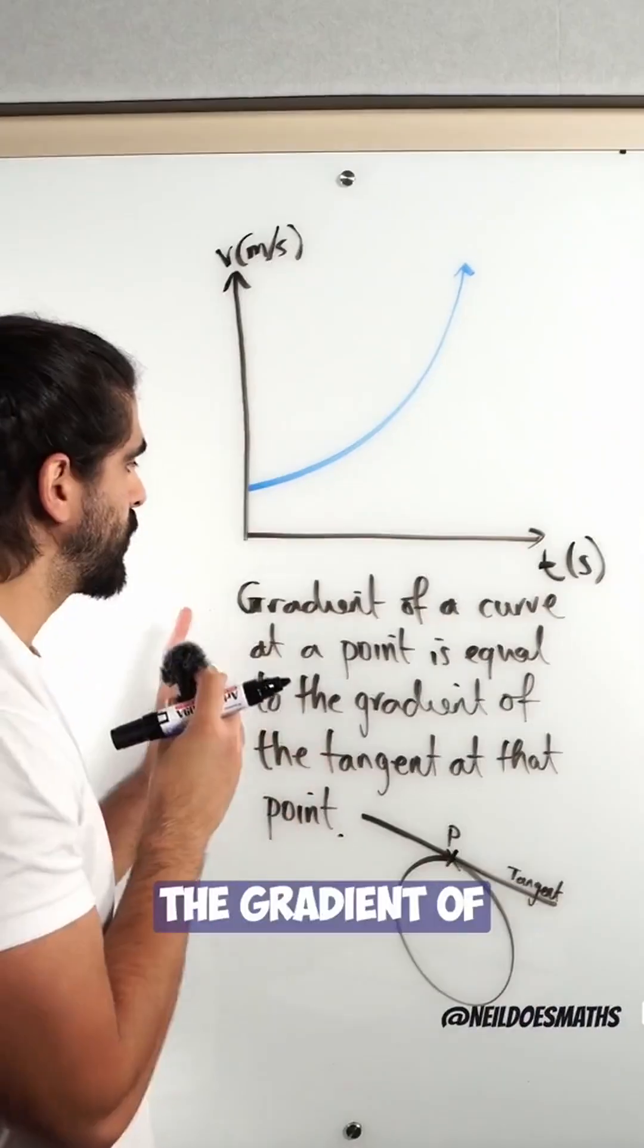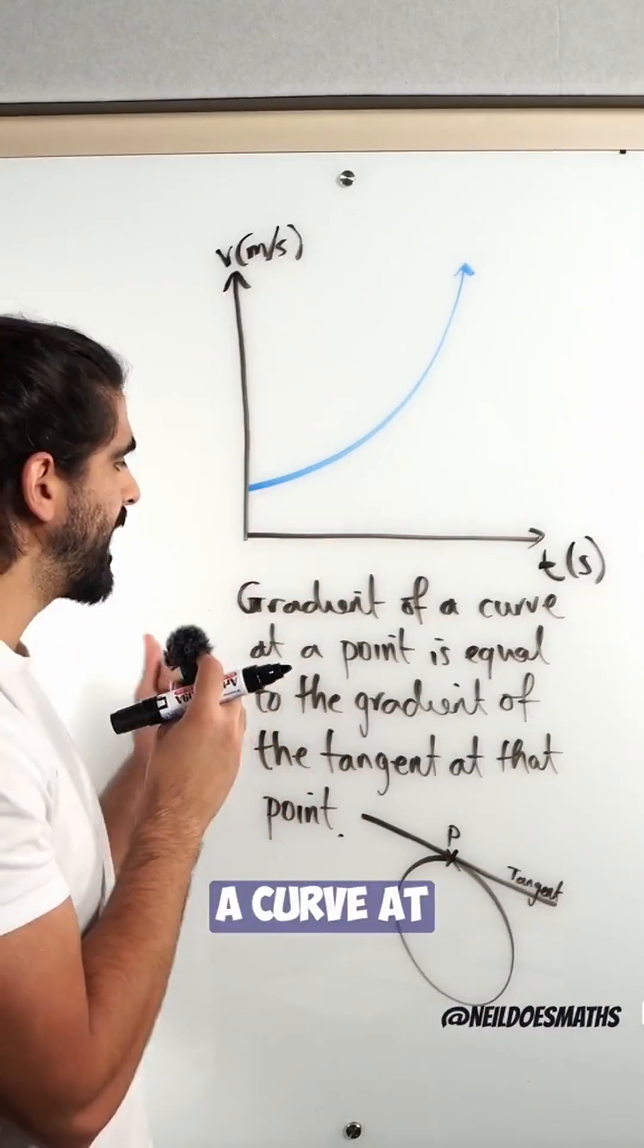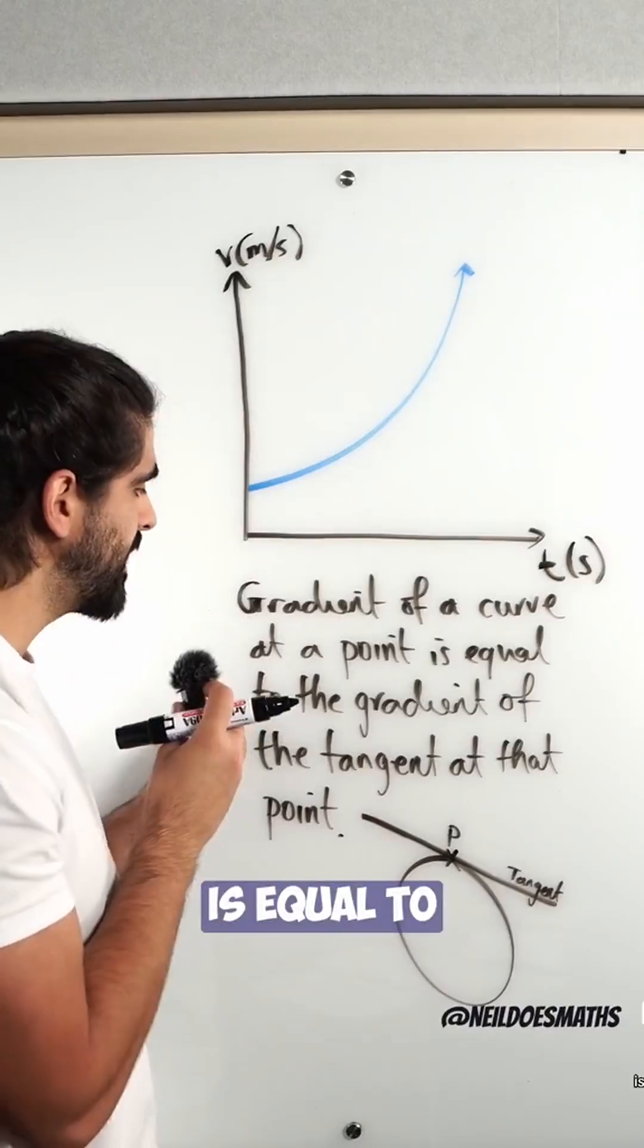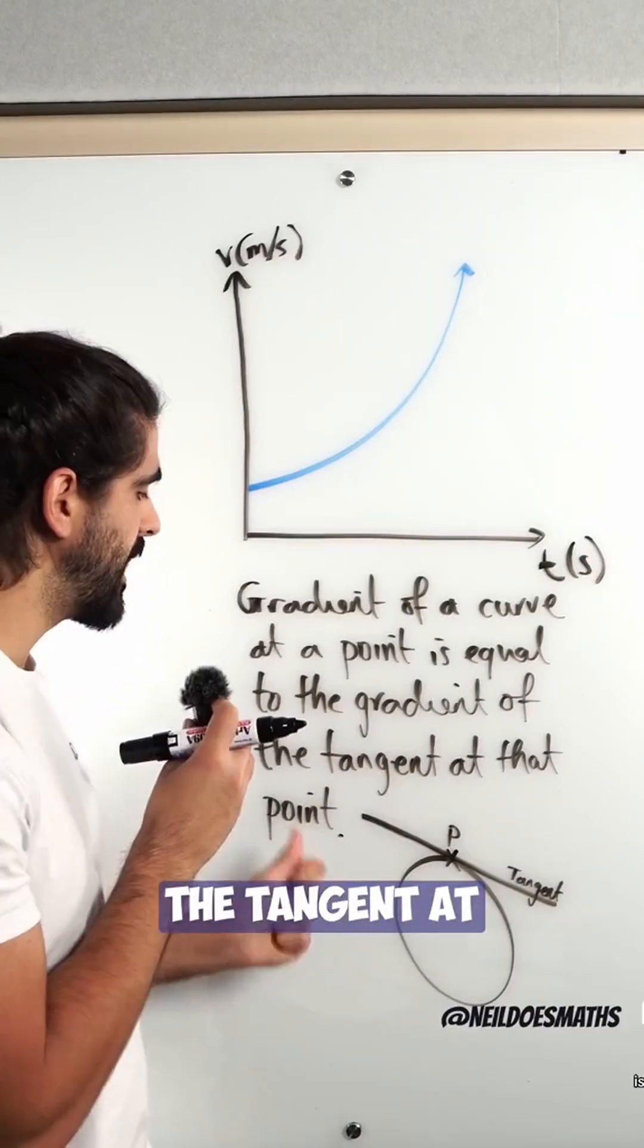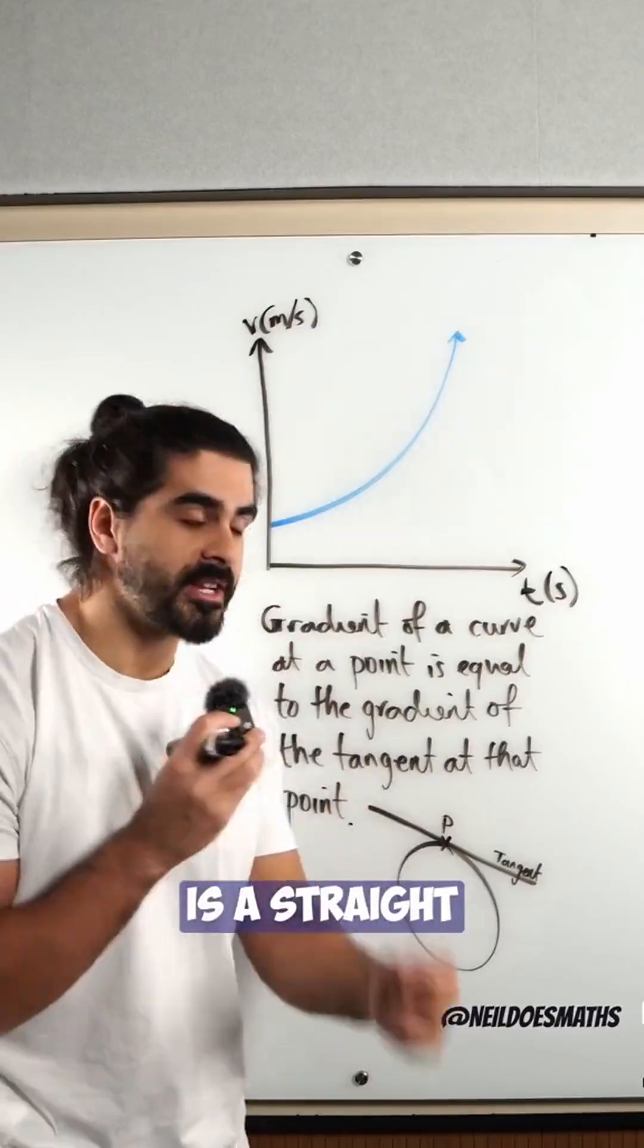The theory says the gradient of a curve at a particular point is equal to the gradient of the tangent at that point. Now, a tangent is a straight line.